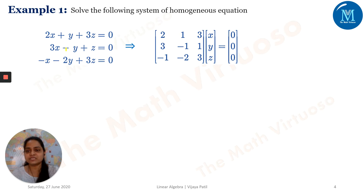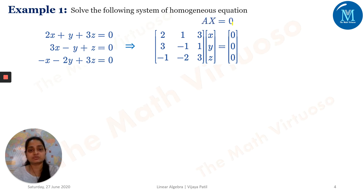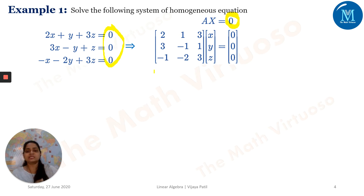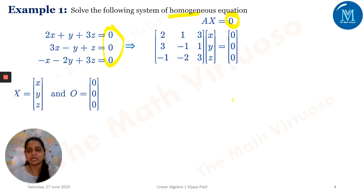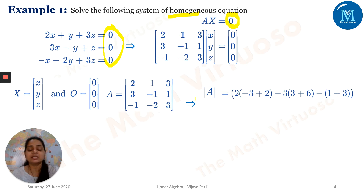The first example: 2X + Y + 3Z = 0, 3X − Y + Z = 0, and −X − 2Y + 3Z = 0. The right-hand side is zero — not B — confirming this is a homogeneous system. The matrix of coefficients is A, the matrix of unknowns is X, and AX = 0. Determinant of A comes out to be −33.